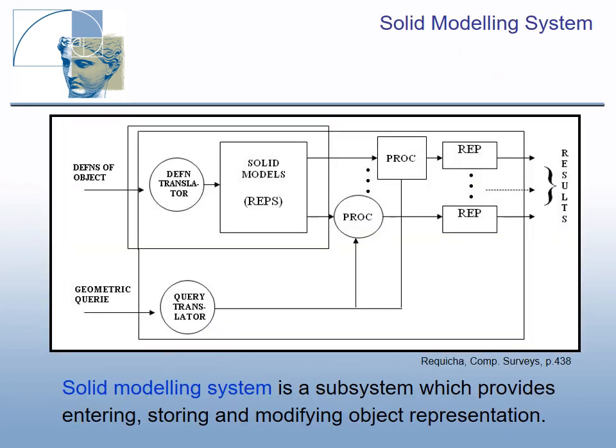The core of the system are geometric models in the form of symbolic structures. They are created by input facilities, by definition translator. The geometric queries and processes which answer geometric questions are shown in the lower left corner. Output facilities and results are shown at the right side. The solid modeler is a subsystem surrounded by the dashed line rectangle, which provides entering, storing, and modifying object representations.